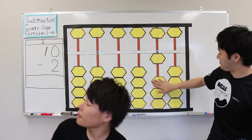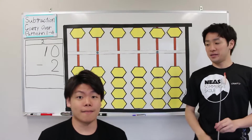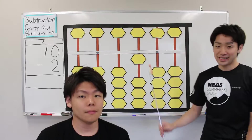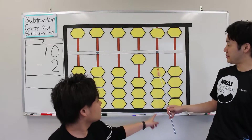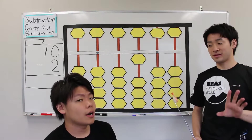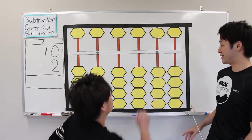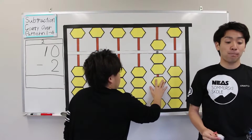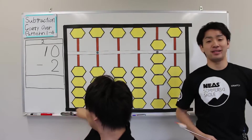Try again. First, plus 10. Next, minus 2. 2, subtract 2, subtract 10, and add 8. That's right. The answer is 8.